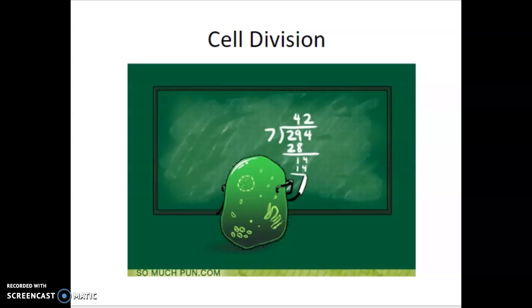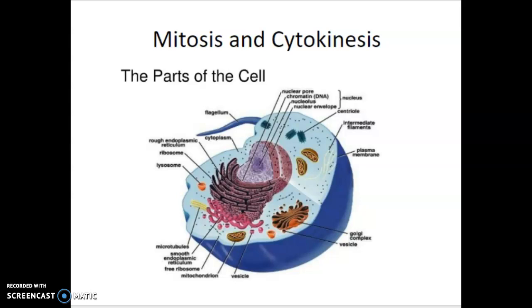This is a video on cell division, section 8.2 of our textbook. We'll look at some of the points of the empty outline. The first point is to look at the two parts of the cell that are equally divided during cell division in eukaryotes. Those two parts are the nucleus and then everything else: the cytoplasm, organelles, and cell membrane. The division of the nucleus and chromosomes is called mitosis, and the division of everything else is cytokinesis.